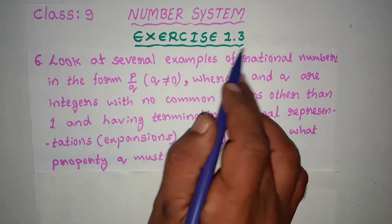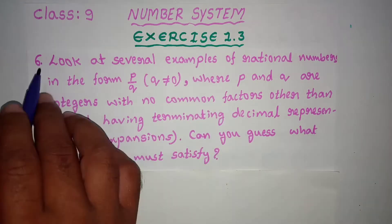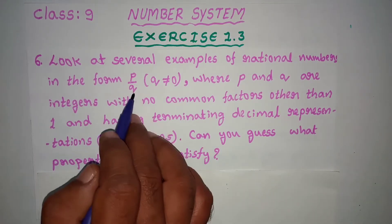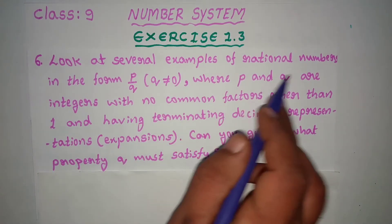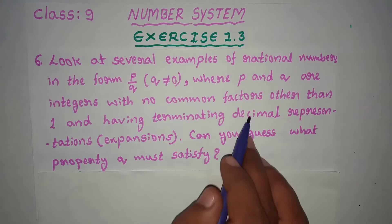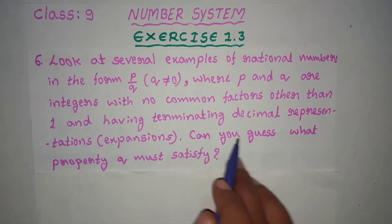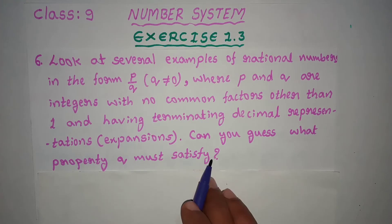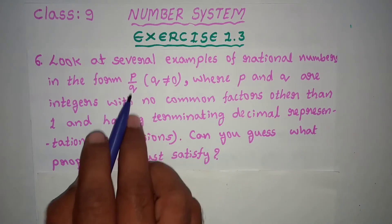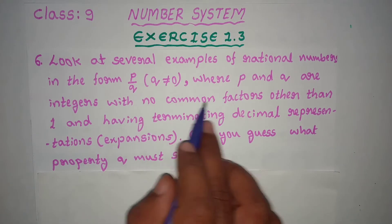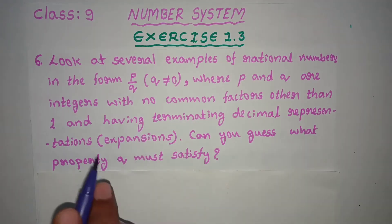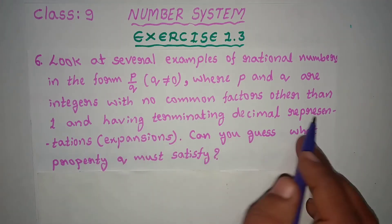Number system exercise 1.3, problems 1 to 5 solved, now doing problem 6. Look at several examples of rational numbers in the form P by Q, where Q is not equal to 0, and P and Q are integers with no common factors other than 1 and having terminating decimal representations. Can you guess what property Q must satisfy?